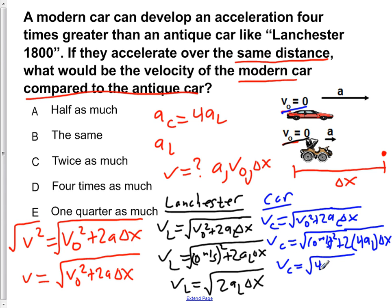You notice that square root of 2aL delta x is, in fact, the velocity of the Lanchester. So we can rewrite the velocity of the car as square root of 4 times the velocity of the Lanchester. But the square root of 4 is just 2. So we can write the velocity of the car as twice the velocity of the Lanchester, giving us the answer of C.